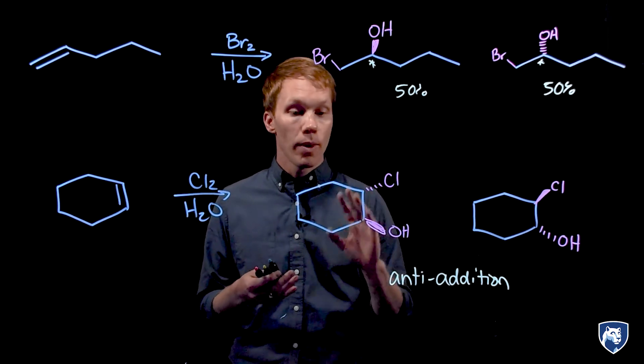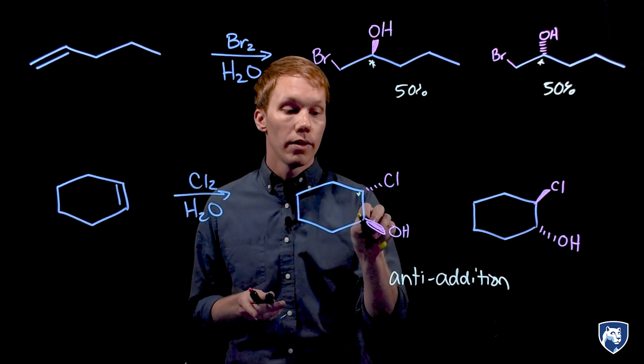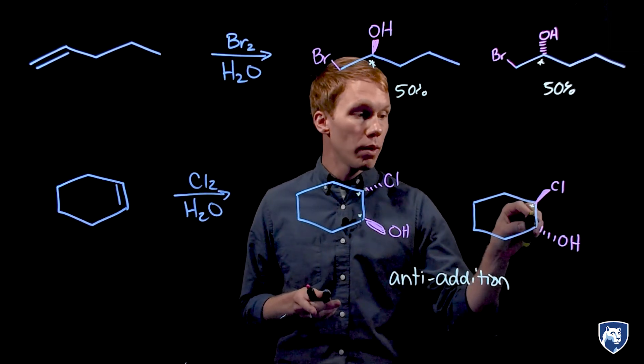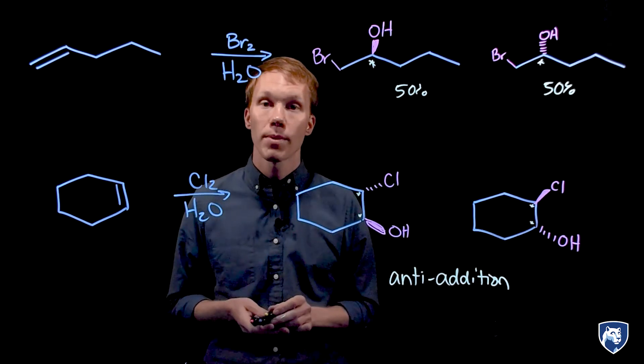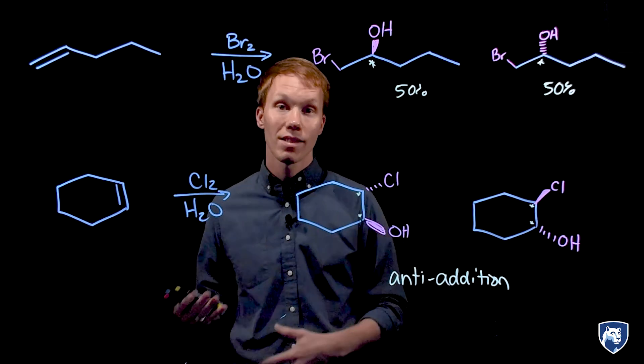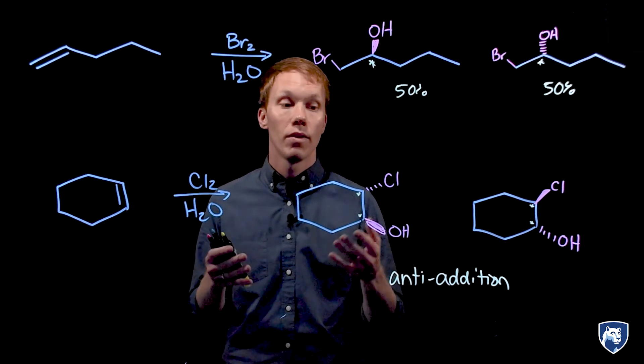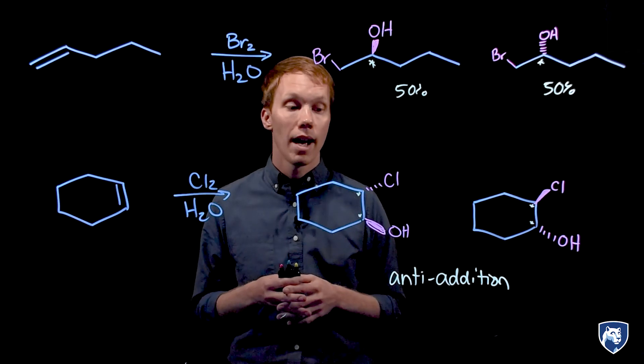In this case we produced two chiral centers and two chiral centers would mean there would be up to four possible stereoisomers in that family. Since two have been produced in excess of the other two, this example is stereoselective for this synthesis of the halohydrin.